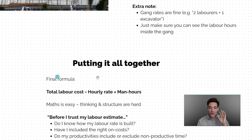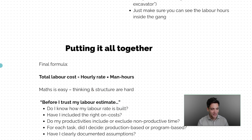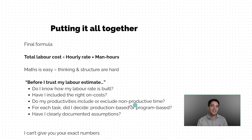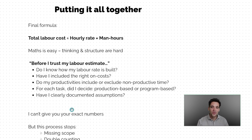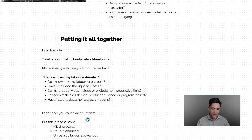To put it all together: our total labor cost for the project is simply the hourly rate multiplied by the man-hours. The maths is easy — making sure all the input numbers that go into the hourly rate and the man-hours are correct is the hard part. Before you calculate your labor estimate, ask yourself: do you understand how your labor rate was built up? Have you included the right on-costs? Do your productivities include or exclude non-productive time? For each task, did you correctly determine whether it's production or program-based, and have you clearly documented your assumptions? This is the process to think through your labor estimates to avoid missing scope, double counting, and undercounting.